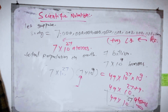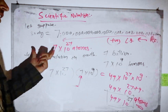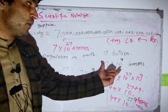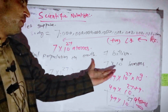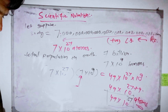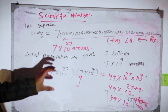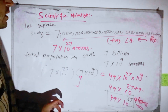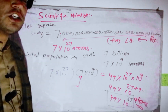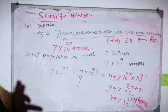This shows how scientific notation makes it easy to calculate the total number of atoms across the entire human population. The definition has been explained along with different sorts of examples.